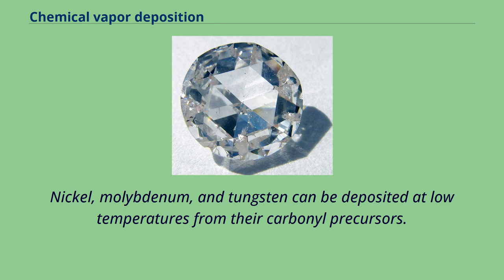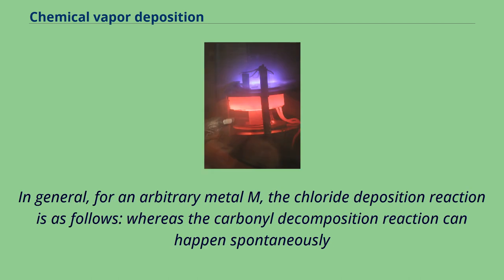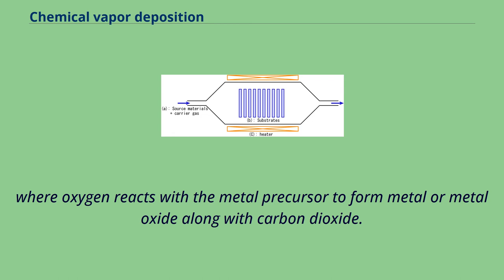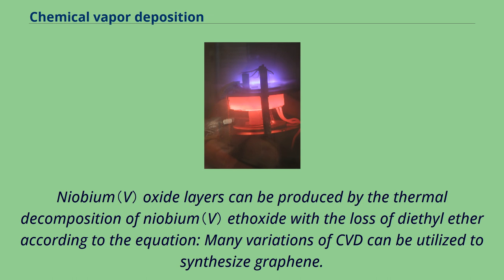In general, for an arbitrary metal M, the chloride deposition reaction proceeds as follows, whereas the carbonyl decomposition reaction can happen spontaneously under thermal treatment or acoustic cavitation. The decomposition of metal carbonyls is often violently precipitated by moisture or air, where oxygen reacts with the metal precursor to form metal or metal oxide along with carbon dioxide. Niobium oxide layers can be produced by the thermal decomposition of niobium ethoxide with the loss of diethyl ether according to the equation.